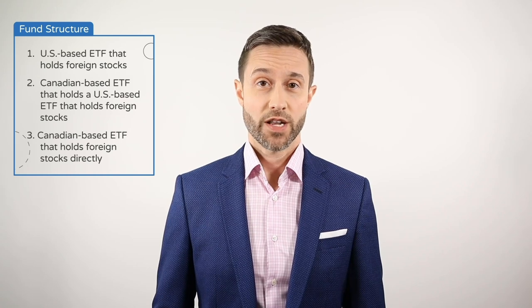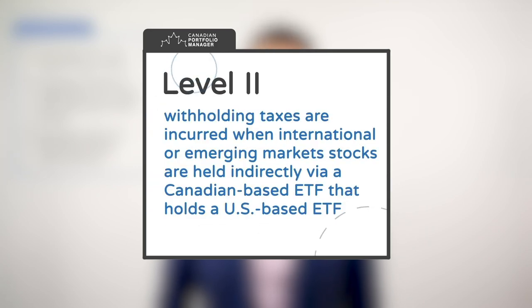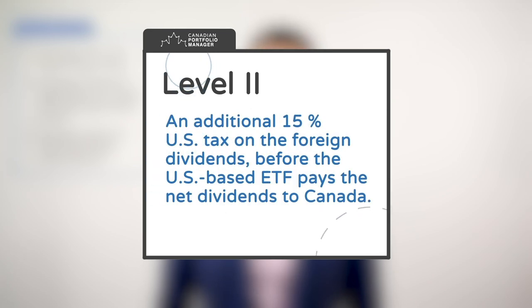Depending on the structure of their ETF, investors could be subject to one or even two layers of withholding tax. Level 1 withholding taxes are those levied by the countries where the stocks are domiciled, whether in the US or overseas. Level 2 withholding taxes are incurred when international or emerging market stocks are held indirectly via a Canadian-based ETF that holds a US-based ETF, resulting in an additional 15% US tax on foreign dividends.